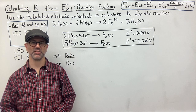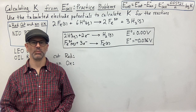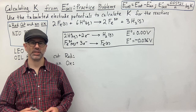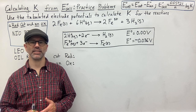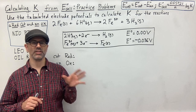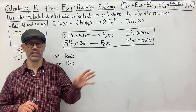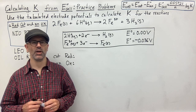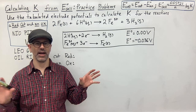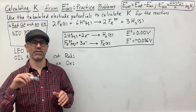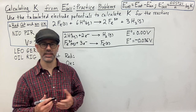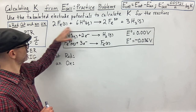Hello everyone and welcome back. My name is Mr. Cobalt, and in this video I'm going to be going over how to calculate the equilibrium constant of a reaction from the electropotential of the cell. This is a reaction happening in an electrochemical cell — you have two beakers, one side is your reduction reaction, the other side is your oxidation reaction, and you want to know what the K value from this reaction is.